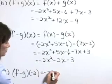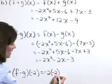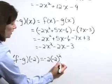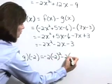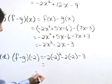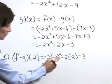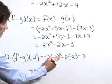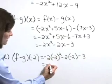So we have negative 2 times negative 2 quantity squared minus 2 times negative 2 and minus 3. Let's clean this up. Negative 2 squared is 4 times negative 2 gives negative 8.